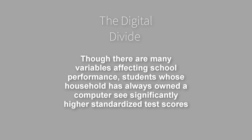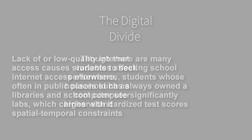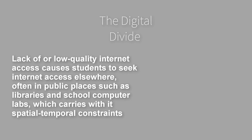Though there are many variables affecting school performance, a student whose household has always owned a computer sees significantly higher standardized test scores. Constraints on ICT access, whether that is slow internet at home or lack of access to any ICT at home, forces users to seek ICT elsewhere — for example, public libraries.